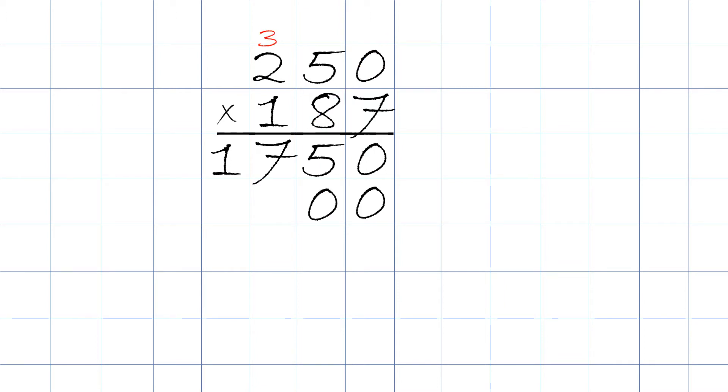We then take eight times five. The answer is 40. We put the second digit, the zero, underneath the seven, and the four we bring on top and put it on top of the three. Cross out the three as well, we don't need it.